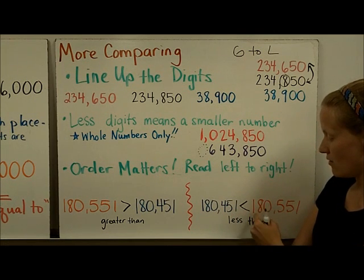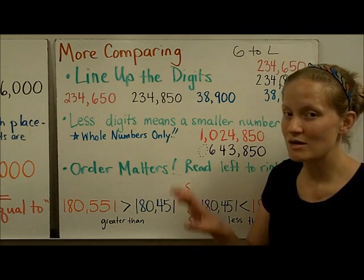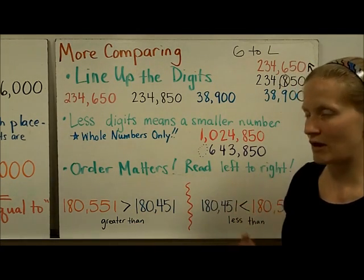180,451 is less than 180,551. So be sure that you can not only place them in the right direction, but that you are able to read the statements correctly left to right.